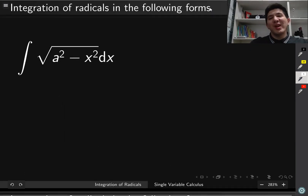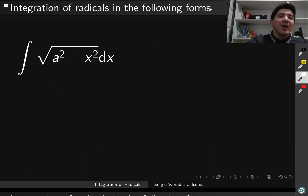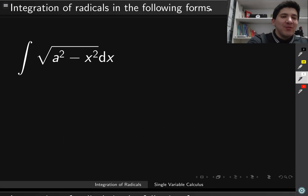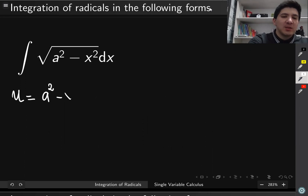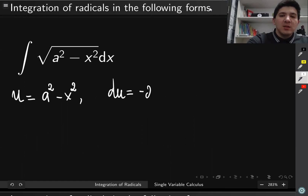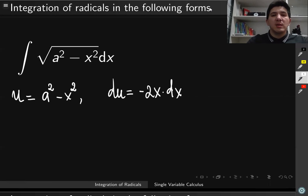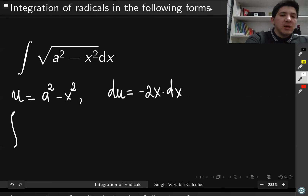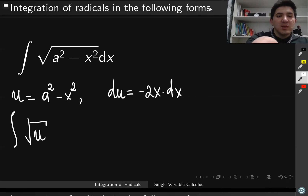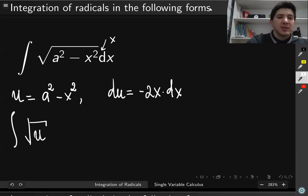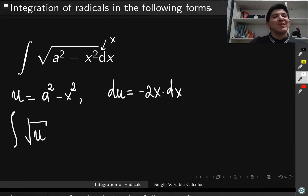Unfortunately, this doesn't work for the case when we have x squared, because if you try to make the substitution u equal to a² minus x², then du equals minus two x dx. Since a is a constant, its derivative with respect to x is zero. If you try to substitute everything with u, you get really stuck because you don't have an x term here. So if you had x, it would be easy, but unfortunately we don't.